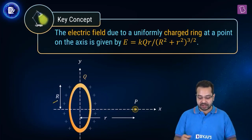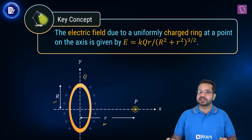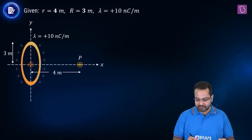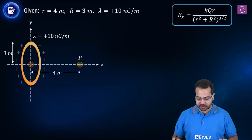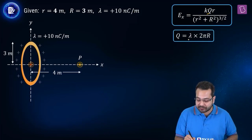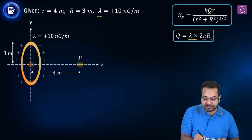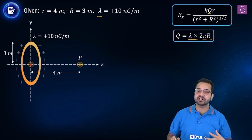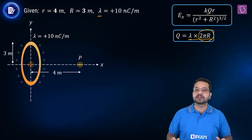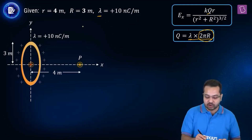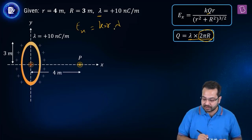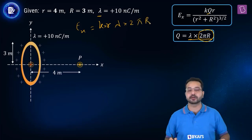Here capital R is the radius of the ring and small r is the distance of the point from the center of the ring. We also need to find Q using Q = λ × 2πR, since we have been given lambda, which is charge per unit length. The total charge on the ring is charge per unit length multiplied by the circumference 2πR. So EX becomes K × (λ × 2πR) × r, substituted into the formula.